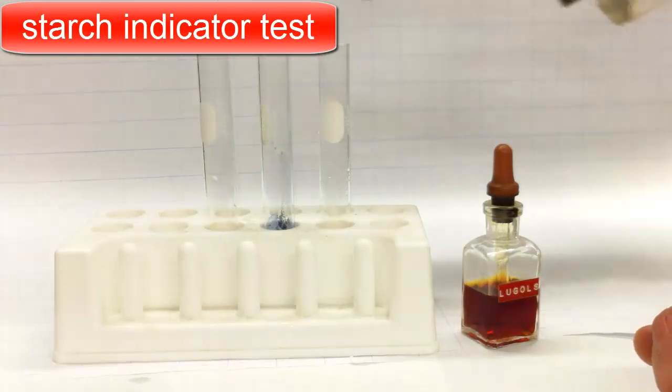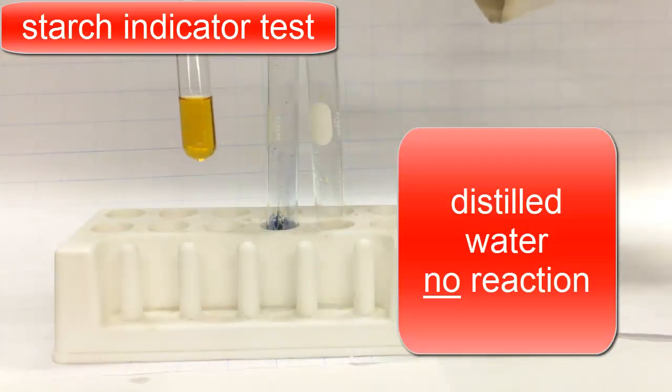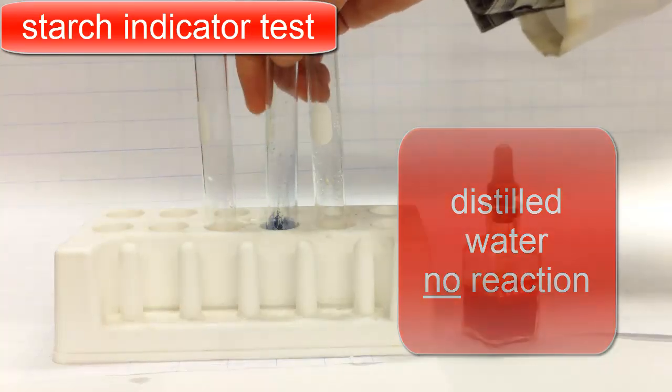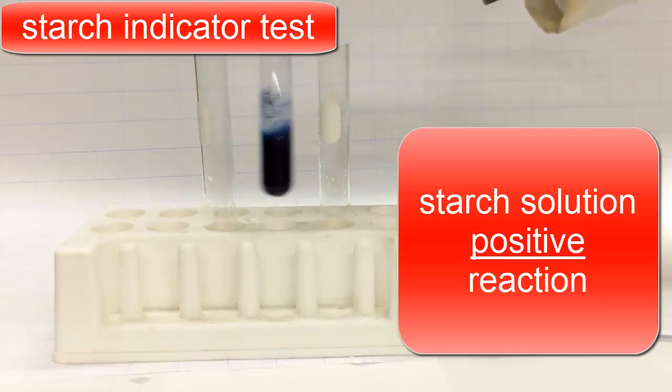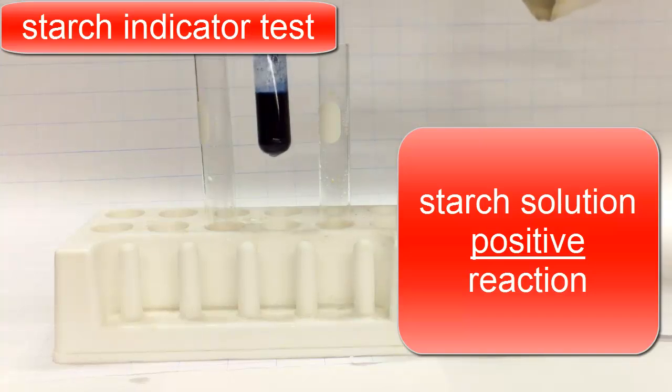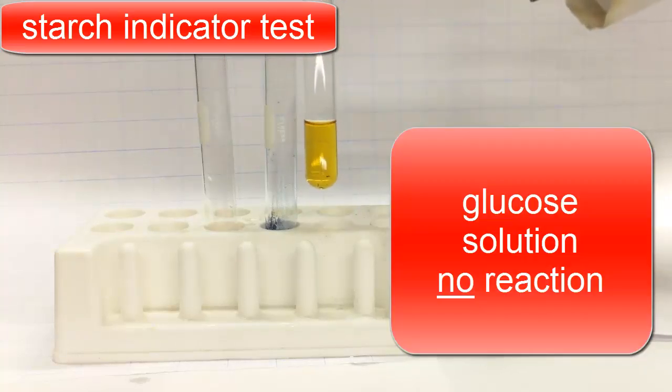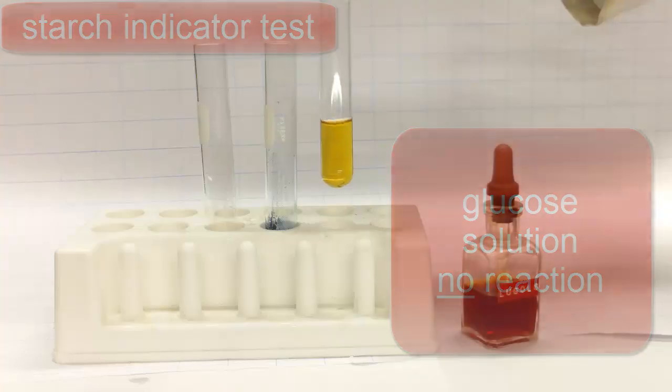So to fill out table 2, here is distilled water and starch indicator, I would say no reaction. Here's the starch solution and starch indicator, and I would say a positive reaction, dark blue color. And here's the glucose solution and starch indicator, and I would say no reaction.